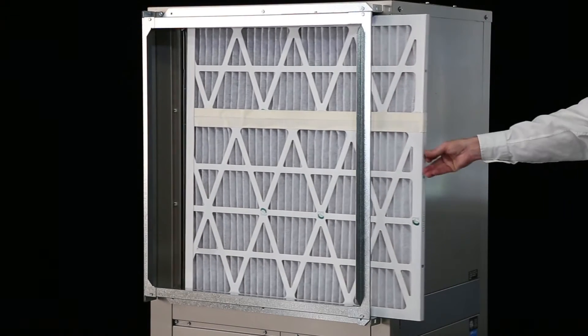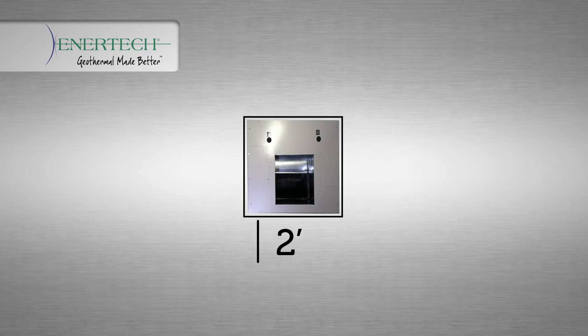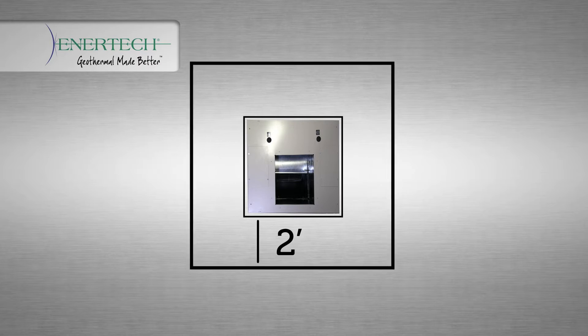It is important to allow adequate service access. A general rule of thumb is at least two feet in the front and two feet on at least one side. An optimum installation would allow at least two feet on all sides.